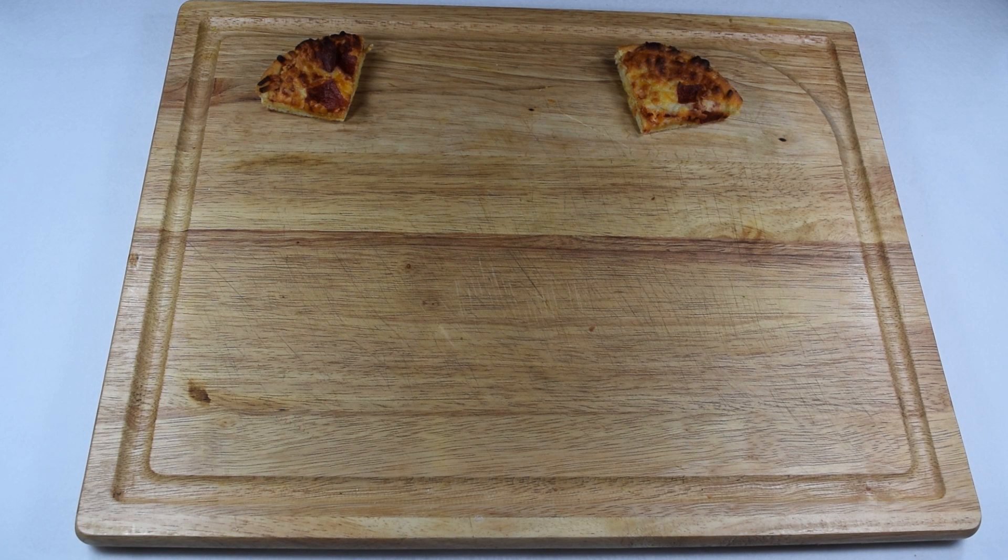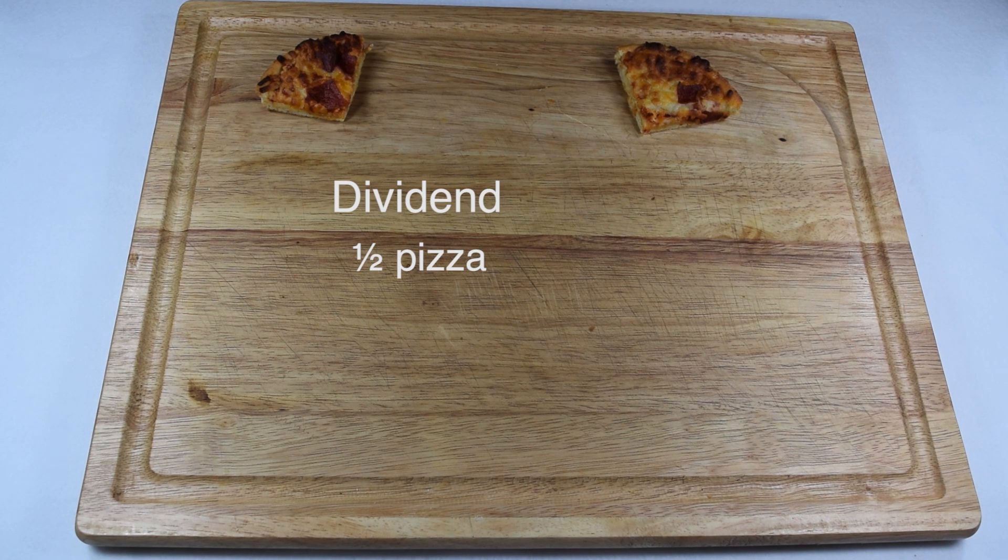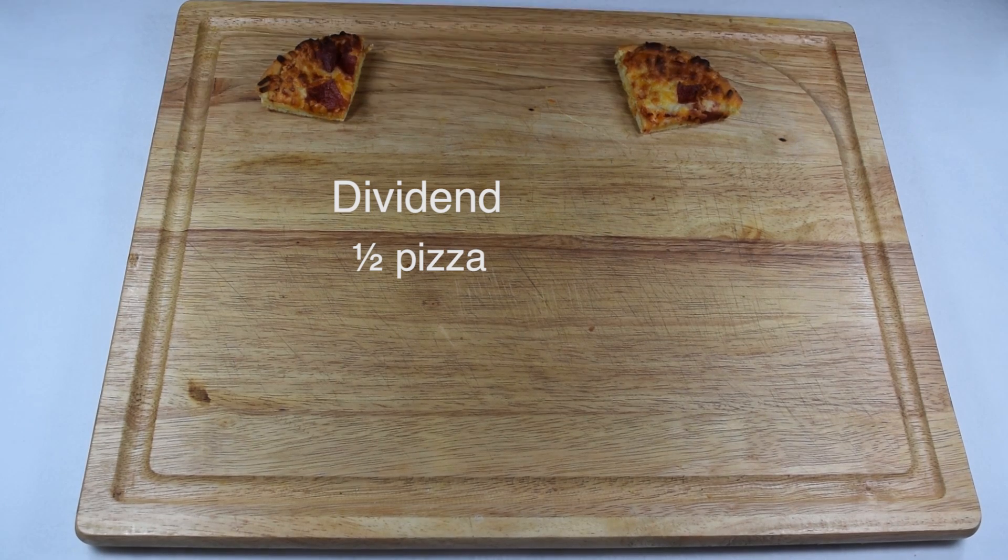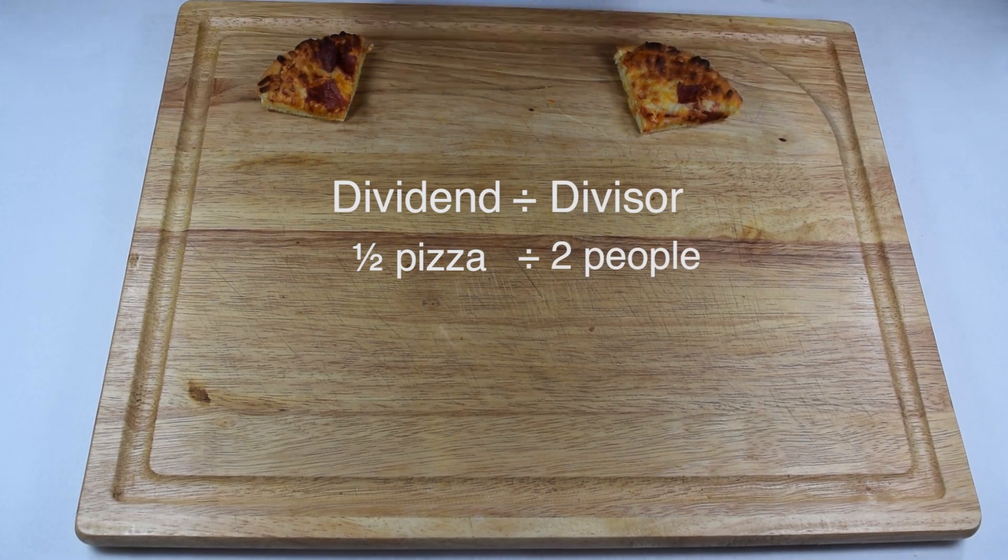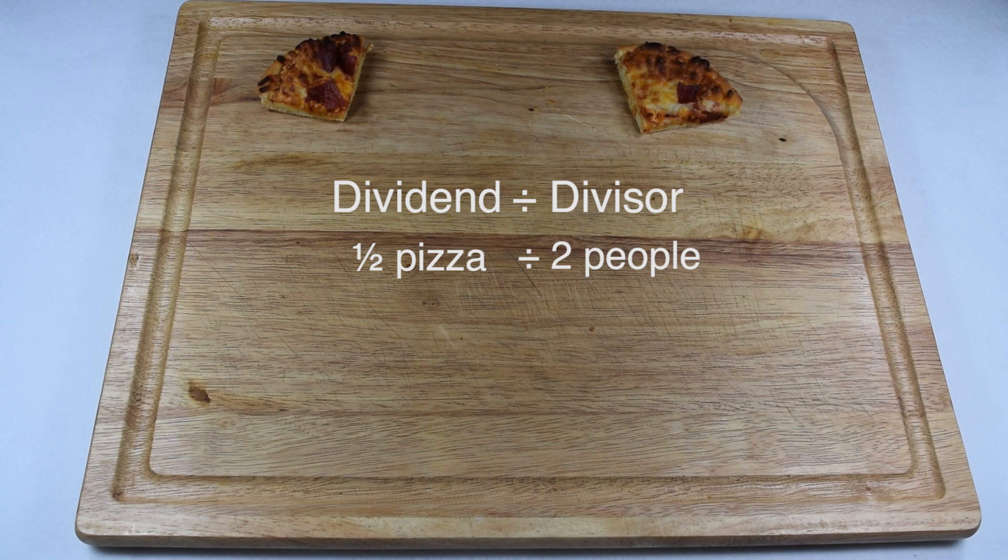We could also solve this as a division problem. When we divide, our dividend tells us how much we have, which is half a pizza. Our divisor tells us how we're going to share it, which is with two people. So this means we're solving one half a pizza divided by two people.